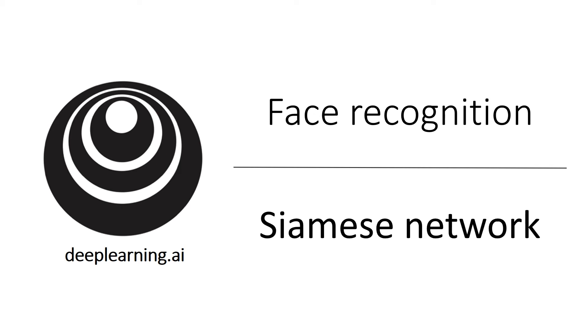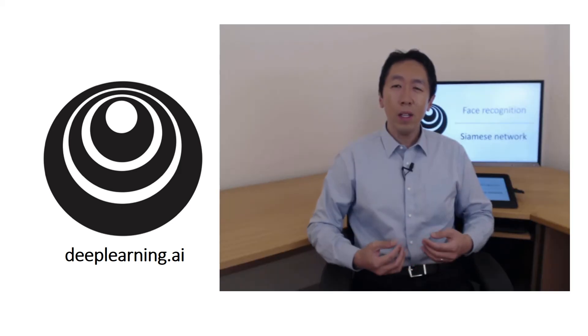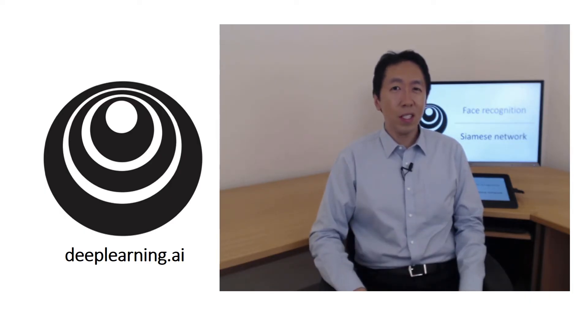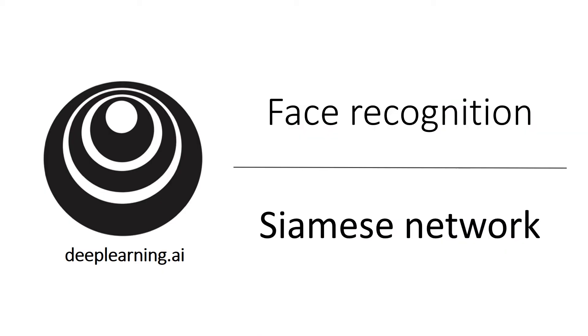The job of the function d, which you learned about in the last video, is to input two faces and tell you how similar or how different they are. A good way to do this is to use a Siamese network. Let's take a look.